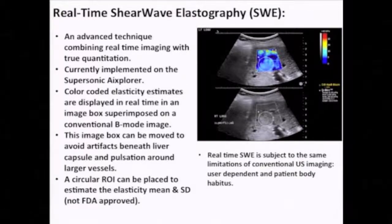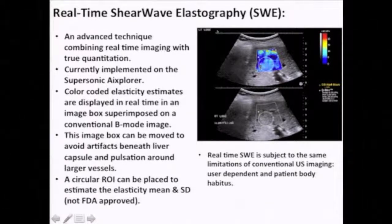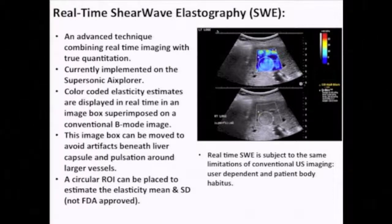We're left with real-time shear wave elastography. Measurements are acquired in a variety of locations in the liver but tend to be acquired superficially in the right lobe through an intercostal approach. A region of interest is placed within a color box and data is obtained — previously in kilopascals, now in meters per second — but the data point is essentially the same: a continuous measurement onto which you superimpose a cutoff to diagnose a particular stage of fibrosis.